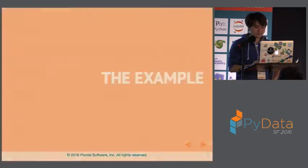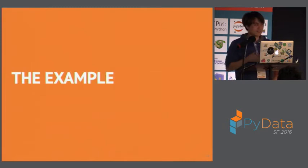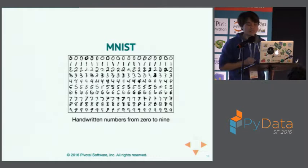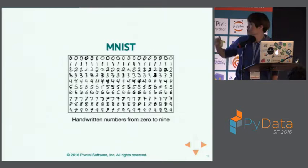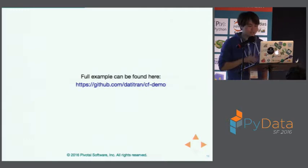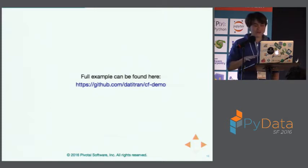Now I want to give you a concrete example, because what I said before is quite abstract. For this example I'll use the famous MNIST dataset — probably all of you know it, it's on Kaggle. The dataset consists of 60,000 training and 10,000 testing images with a size of 28×28, and the problem is to recognize handwritten numbers from 0 to 9. The demo code can be found on my GitHub account.